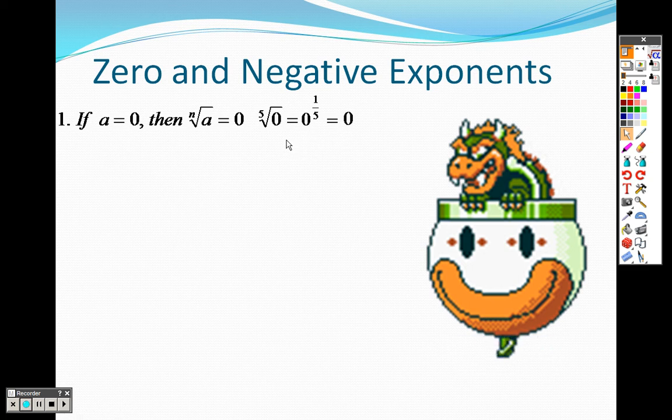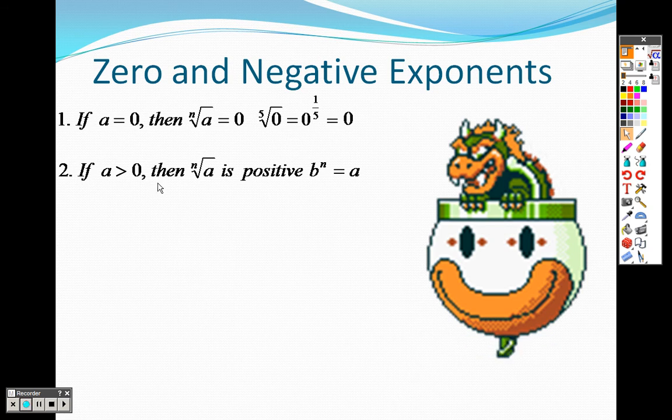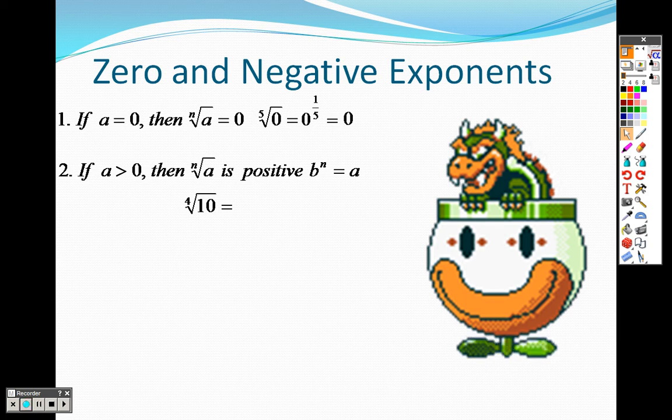If a is greater than zero, so this number underneath is positive, then the answer is going to be positive. The fourth root of 10 I could rewrite as 10 to the one-fourth. Remember, the fourth root you rewrite it as one-fourth.